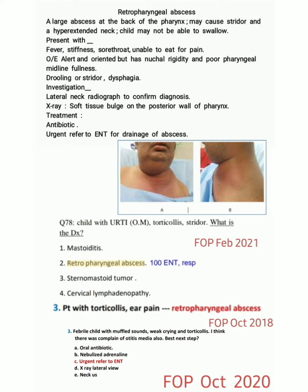Retropharyngeal abscess is a large abscess at the back of the pharynx. It may cause stridor and hyperextended neck, and the child may not be able to swallow.